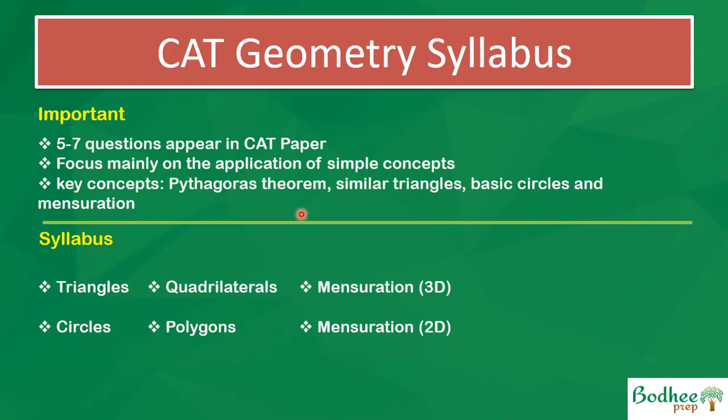Mensuration questions are very familiar — for example, if you pour three liters of milk from a cone into a cylinder, what would be the height of the cylinder? Questions on coordinate geometry are fewer in number; they cover only basic, rudimentary concepts. Trigonometry questions have not been seen at all in the exam, but knowing trigonometric concepts or tricks can help you solve conventional questions in a non-conventional way.